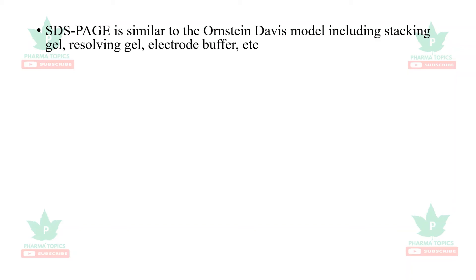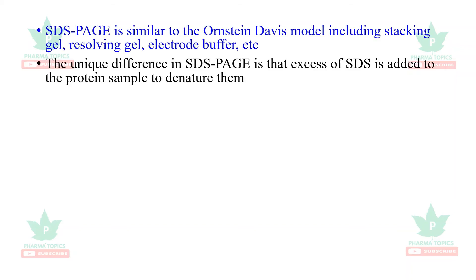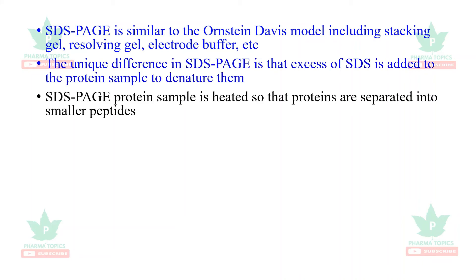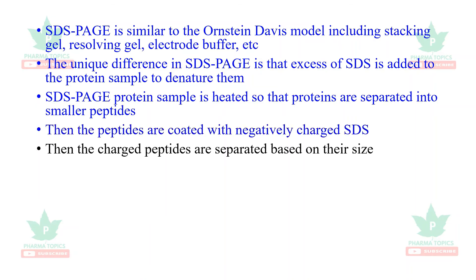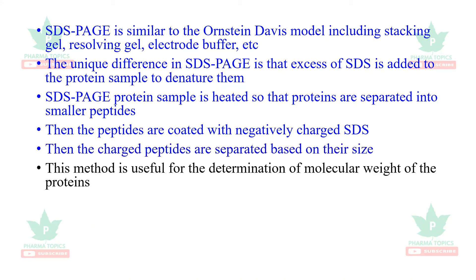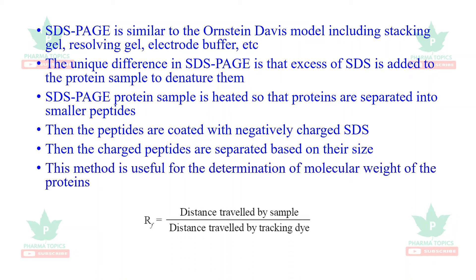SDS-PAGE is similar to the Ornstein-Davis model, including stacking gel, resolving gel, and electrode buffer. The unique difference is that excess sodium dodecyl sulfate is added to the protein sample to denature it. The protein sample is heated so that proteins are separated into smaller peptides, then the peptides are coated with negatively charged SDS, and the charged particles are separated based on their size.